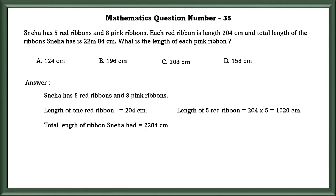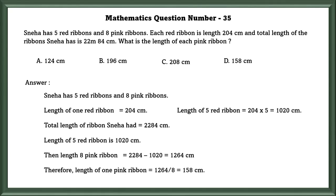The total length of 8 pink ribbons. The length of 8 pink ribbons is equal to 1264. In order to find the length of 1 pink ribbon, we have to subtract the total from the 5 red ribbons. The length of 8 pink ribbons is equal to 1264. In order to find the length of 1 pink ribbon, we have to divide the length of 8 pink ribbons by 8, which is equal to 158 cm.